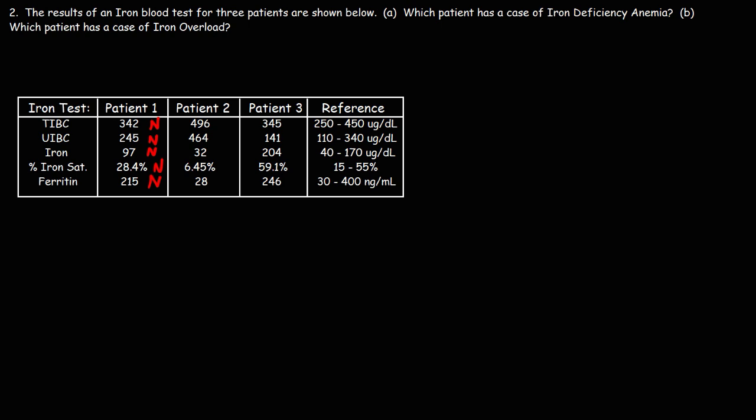Now patient 2. Notice that his TIBC level is above 450, so we're going to put H for high. His UIBC levels are also high. Now his serum iron levels are low, it's below 40, so let's put L for low. And his iron saturation levels are also low. His ferritin levels are low too.